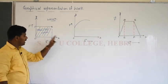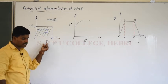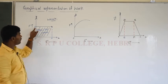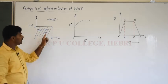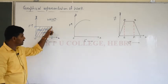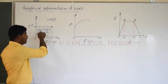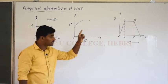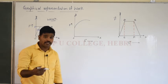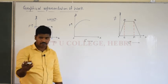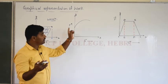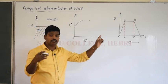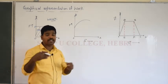In the force-displacement graph, the x-axis represents the displacement vector S and the y-axis represents force. With a constant force applied, the displacement is parallel to the x-axis and the area under this curve represents work done. We now move to the second and third diagrams, which indicate the case where force is variable. In both cases, the area under the graph represents work done.